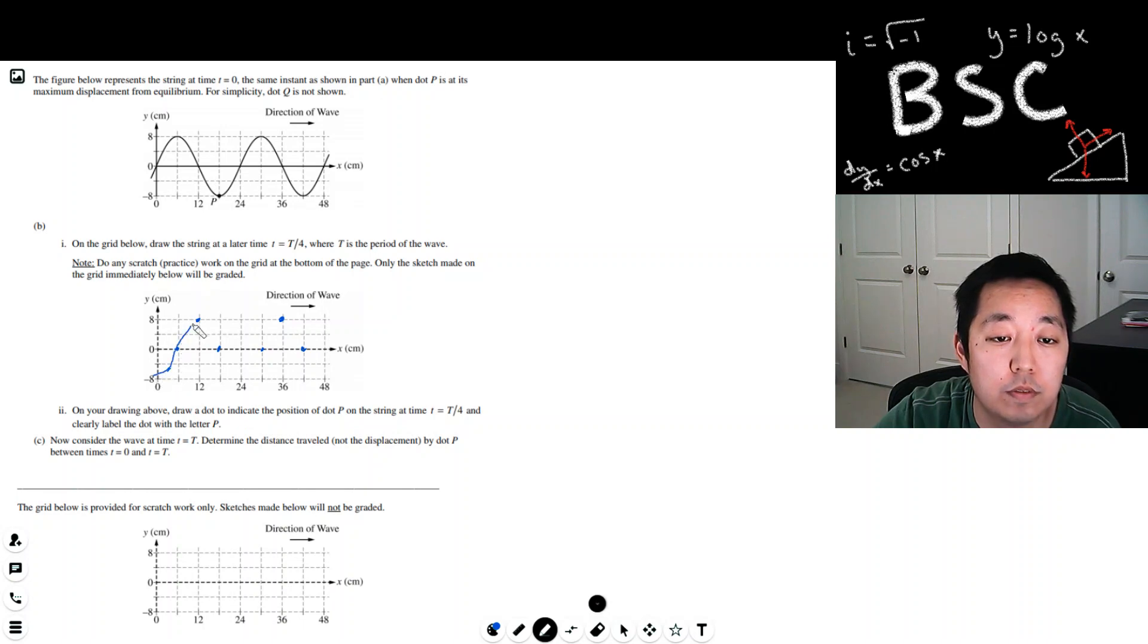And then we just kind of fill it in. What a beautiful sine wave. I don't think you get totally graded on penmanship, but yeah, it's pretty much a mirror image of this thing shifted over a quarter of a wave. On your drawing below, draw a dot to indicate the position of dot P on the string at time T. Now P, remember, does it move horizontally? It's right here. It doesn't move horizontally. It moves up and down, right? Like that piece of rope, if I color it, it's just going up and down.